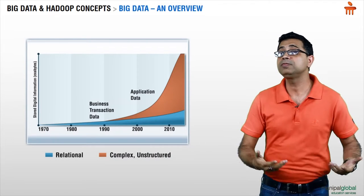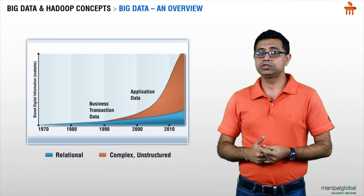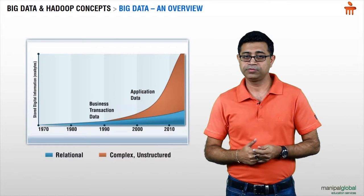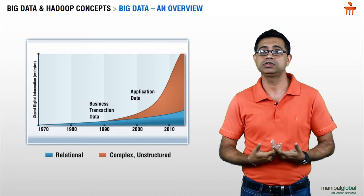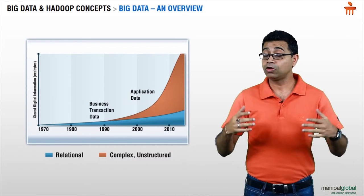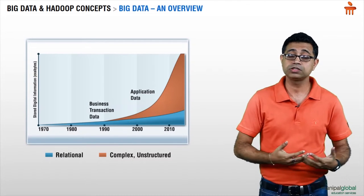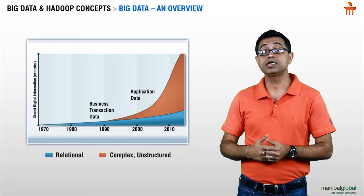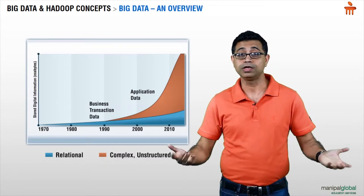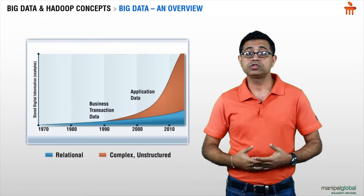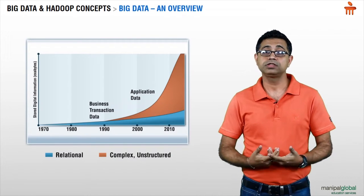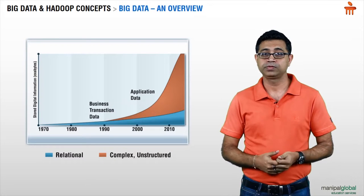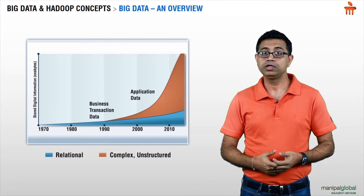The problem that traditional data stores like RDBMS were facing was how to store this data. On one hand, the data did not have structure. On the other hand, the size of this data was becoming humongous — it was complex, unstructured, huge, and growing.